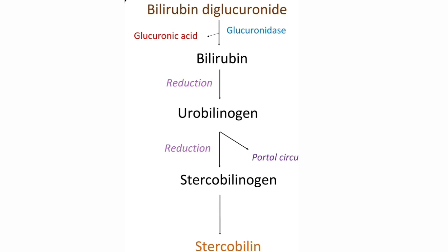The remaining 80% of urobilinogen stays in the intestinal lumen and is reduced to stercobilinogen, which is excreted in feces at 250 to 350 milligrams per day. When exposed to atmospheric air, stercobilinogen is oxidized to a colored product called stercobilin, which gives feces its characteristic brown color.